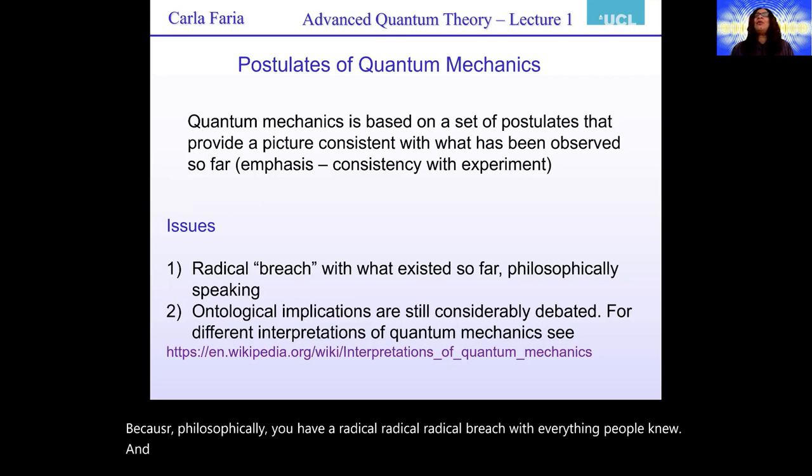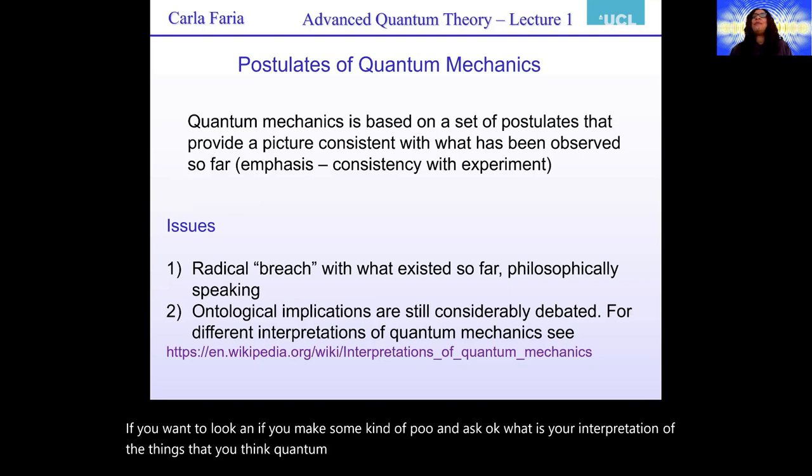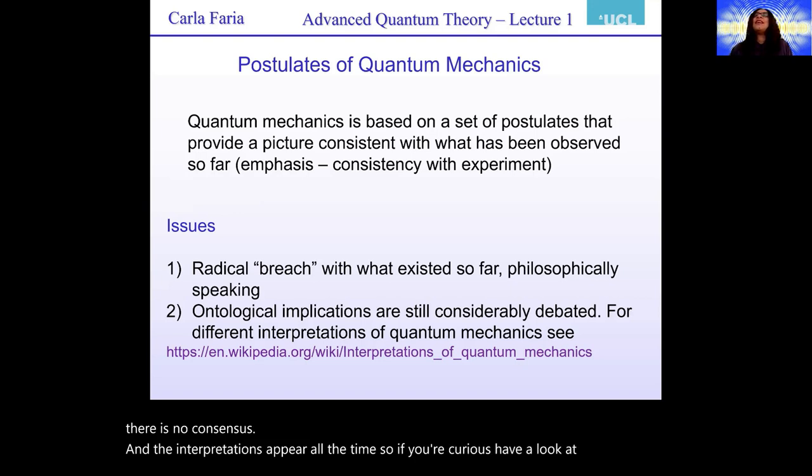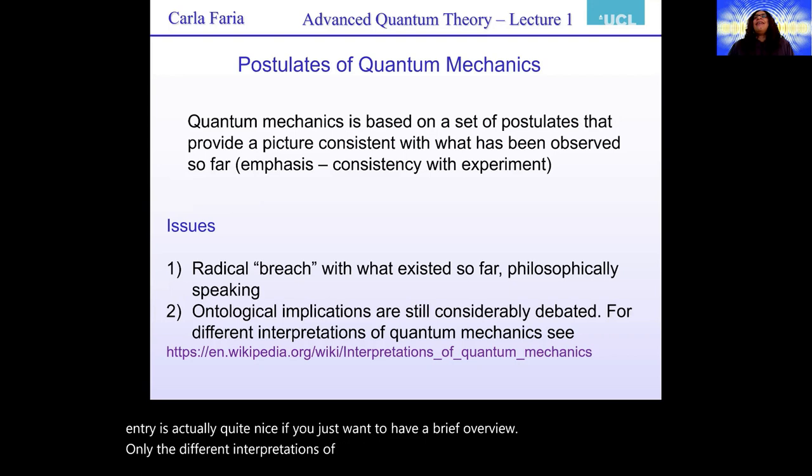And the implications are enormous in the sense that even nowadays, if you want to look and if you make some kind of poll and ask what is your interpretation of the things that you see in quantum mechanics, you pretty much are going to conclude that there is no consensus and the interpretations appear all the time. So if you're curious, have a look at this Wikipedia entry, it's actually quite nice if you just want to have a brief overview on the different interpretations of quantum mechanics.